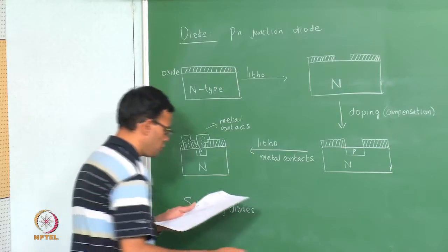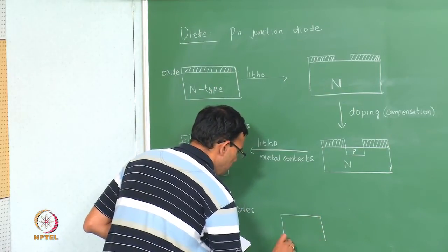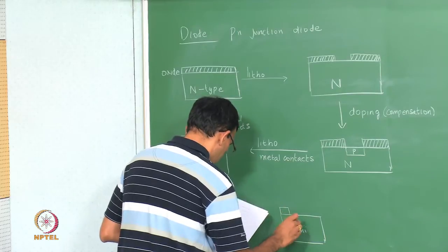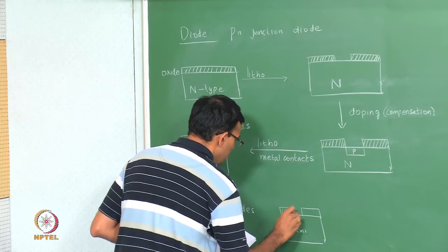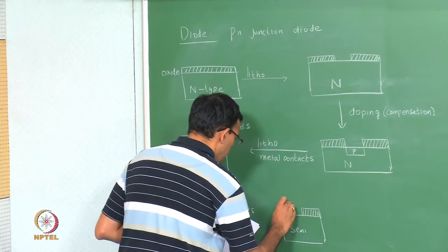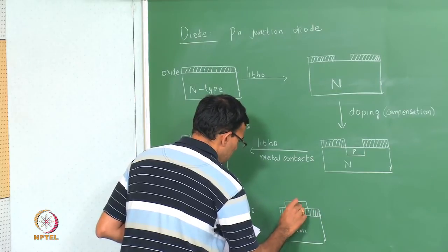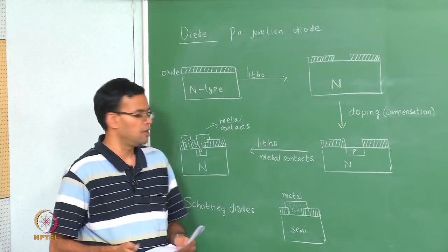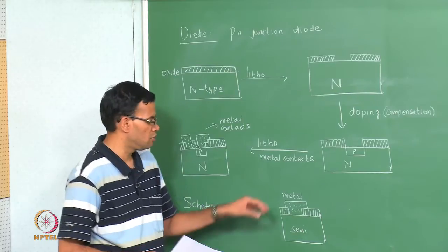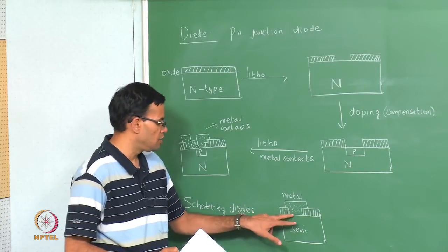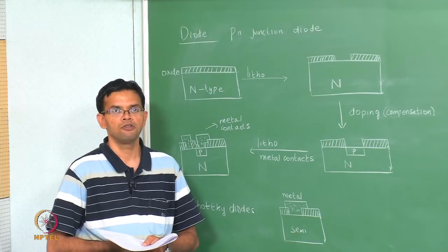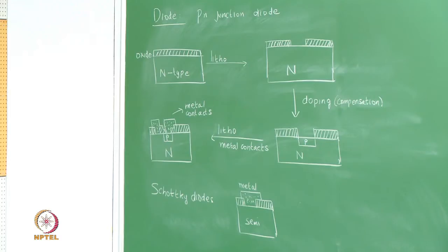Here is a schematic of the Schottky diode. You have the semiconductor and you have the oxide layer, then you have the metal. We can imagine that you can make electrical connections to the metal and the semiconductor, and this junction is essentially a Schottky junction. Let us next look at some examples of how to fabricate transistors.